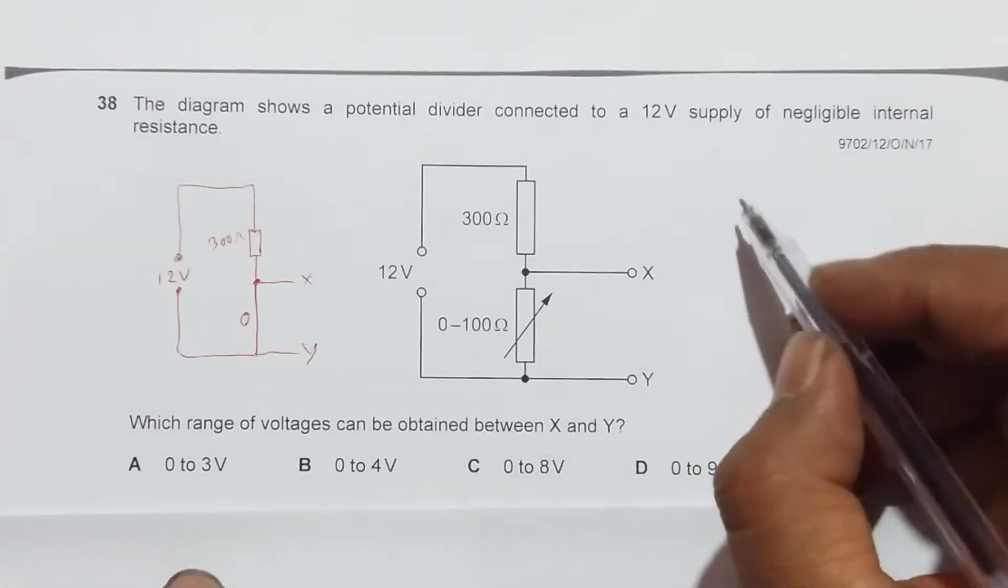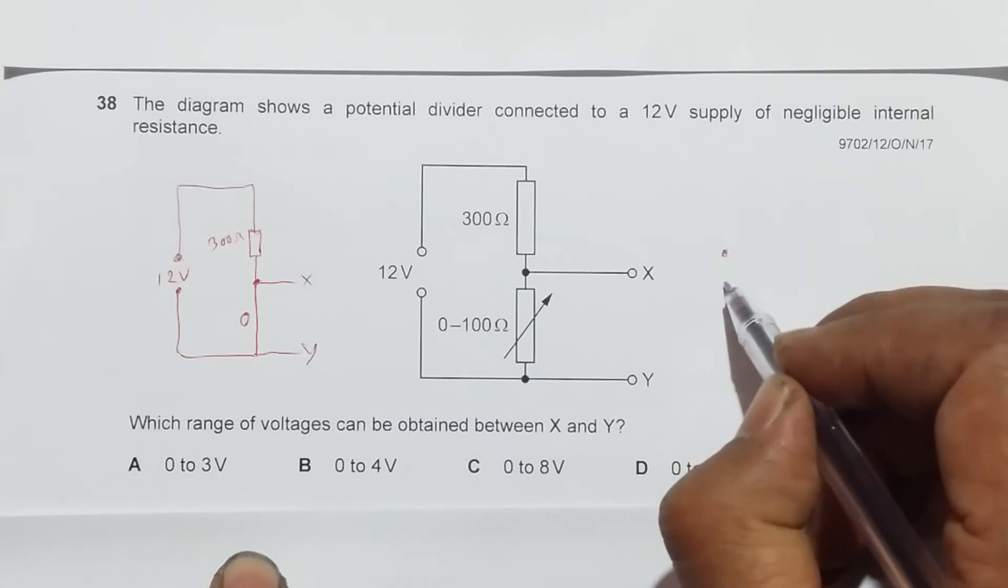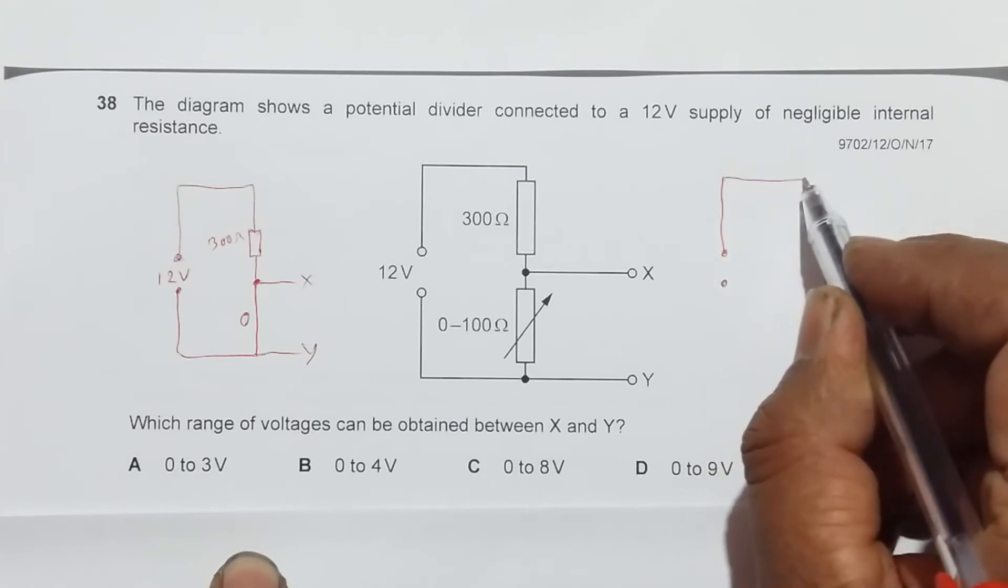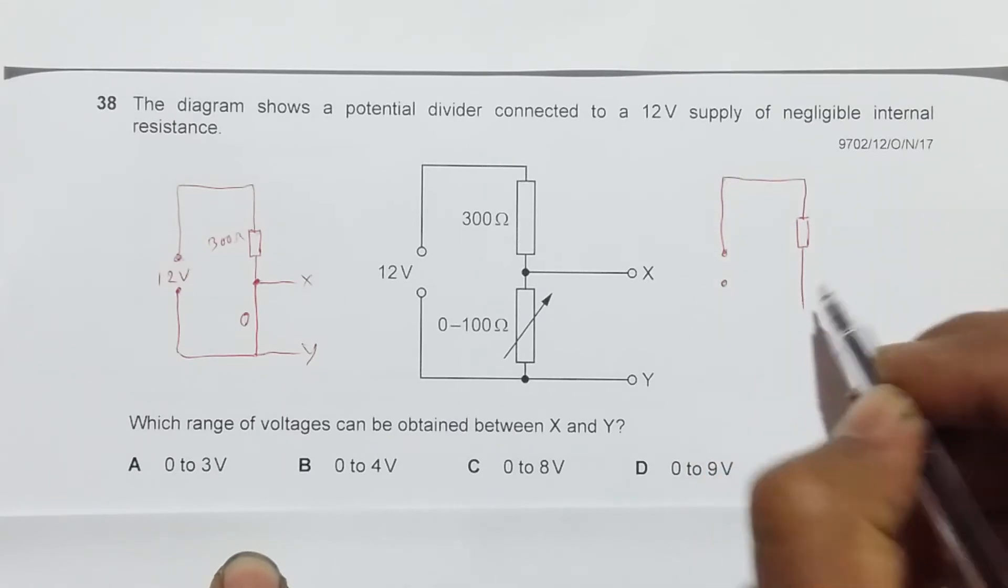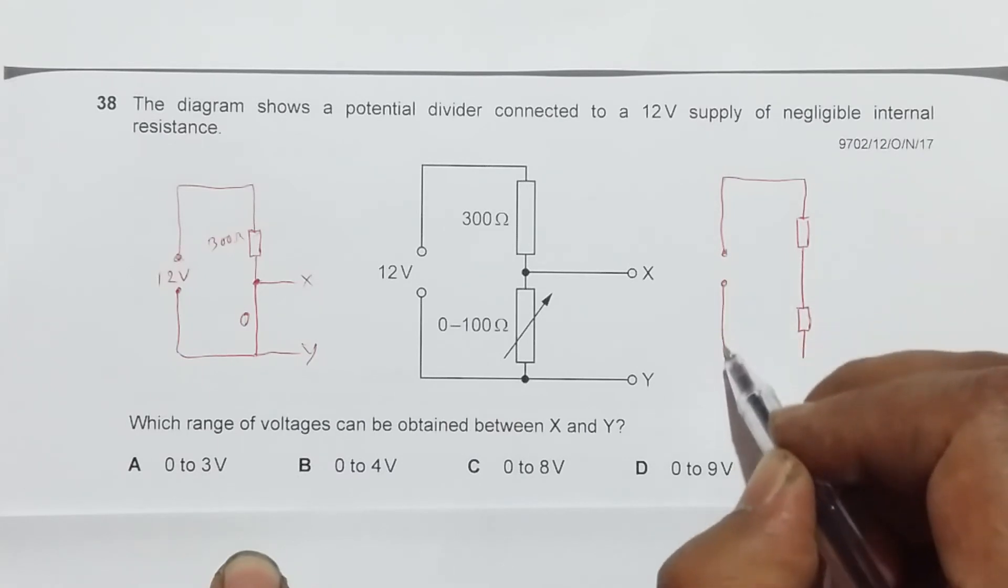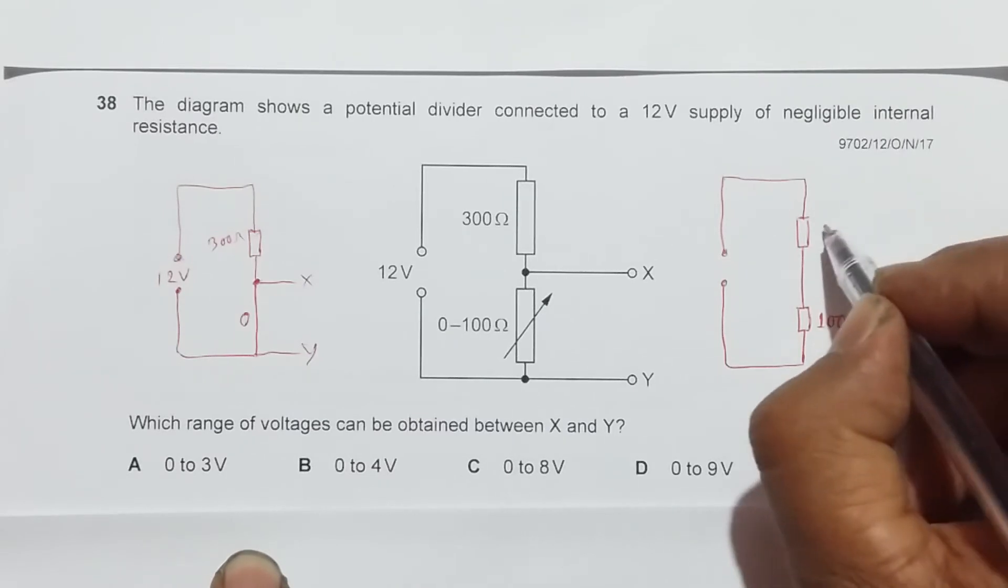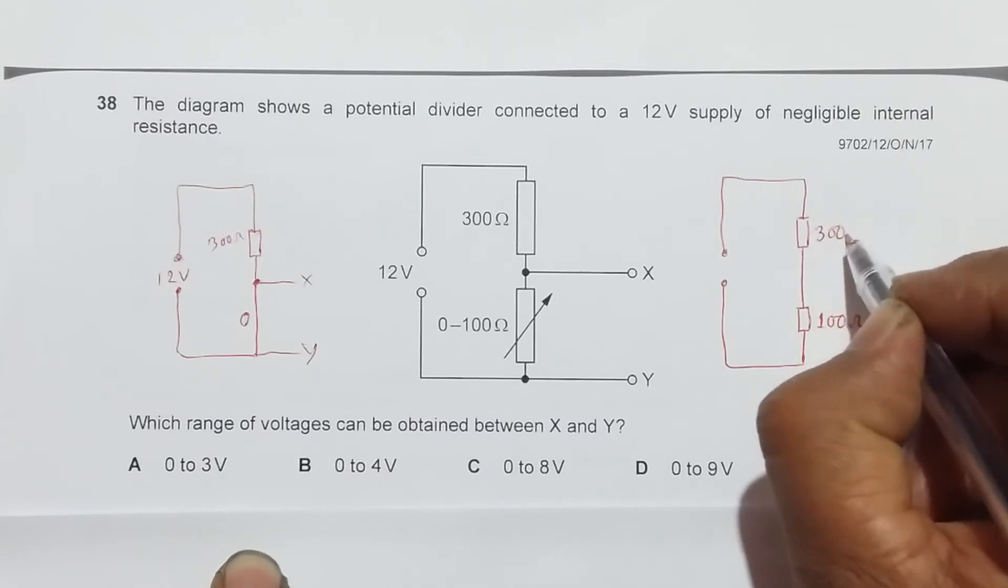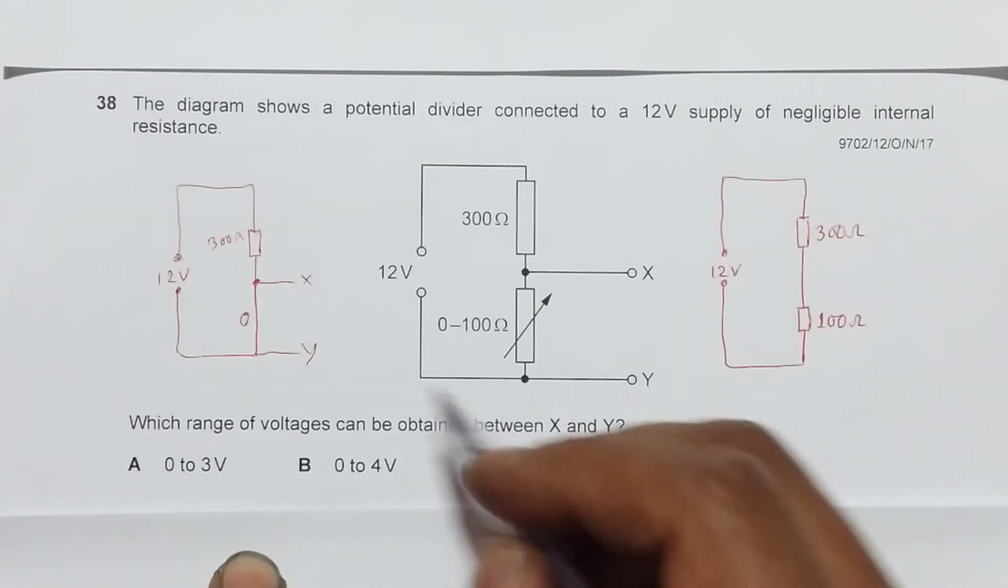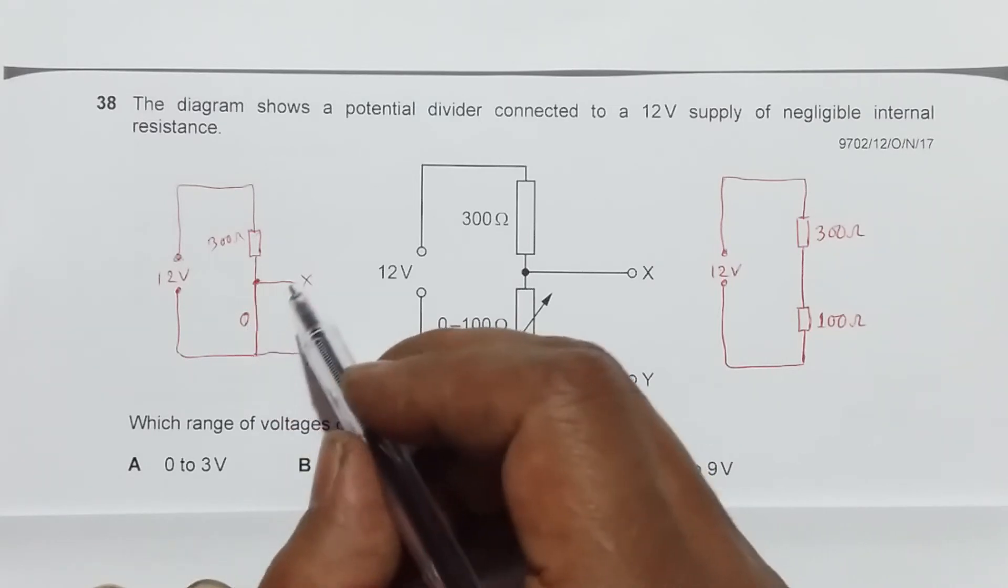If it is measuring 100 ohm, the circuit will be like this. We have the supply, the wire goes like this, this is the 300 ohm resistor, and this will be the 100 ohm resistor. This is 100 ohm, this is 300 ohm, this is 12 volt.